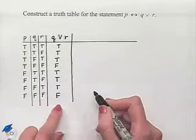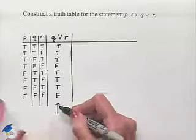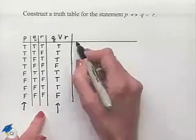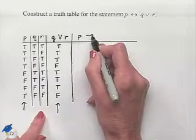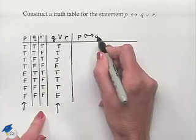Now we need to connect this column with our first column as a biconditional: P, if and only if, Q or R.